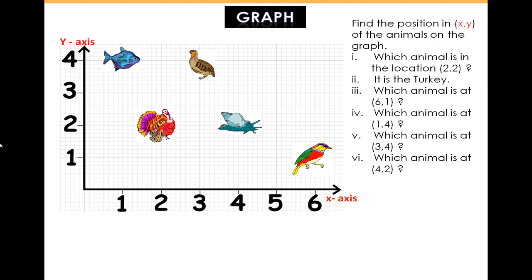Which animal is at 1, 4? The fish. Which animal is at 3, 4? The quail. Which animal is at 4, 2? The snail.